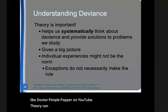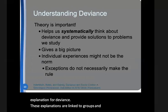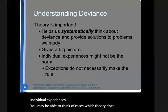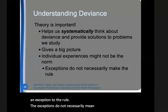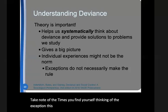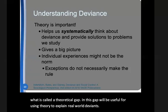Theory can be used to explain deviance in different contexts. Sociological theories of deviance provide a big-picture explanation for deviance. These explanations are linked to groups and institutions, not individual experiences. You may be able to think of cases in which theory does not apply — an exception to the rule. The exceptions do not necessarily mean the theory is wrong, but they are useful for comparing and testing theories. Take note of the times you find yourself thinking of the exception; this might be an indication that you've identified what is called a theoretical gap, and this gap will be useful for using theory to explain real-world deviance.